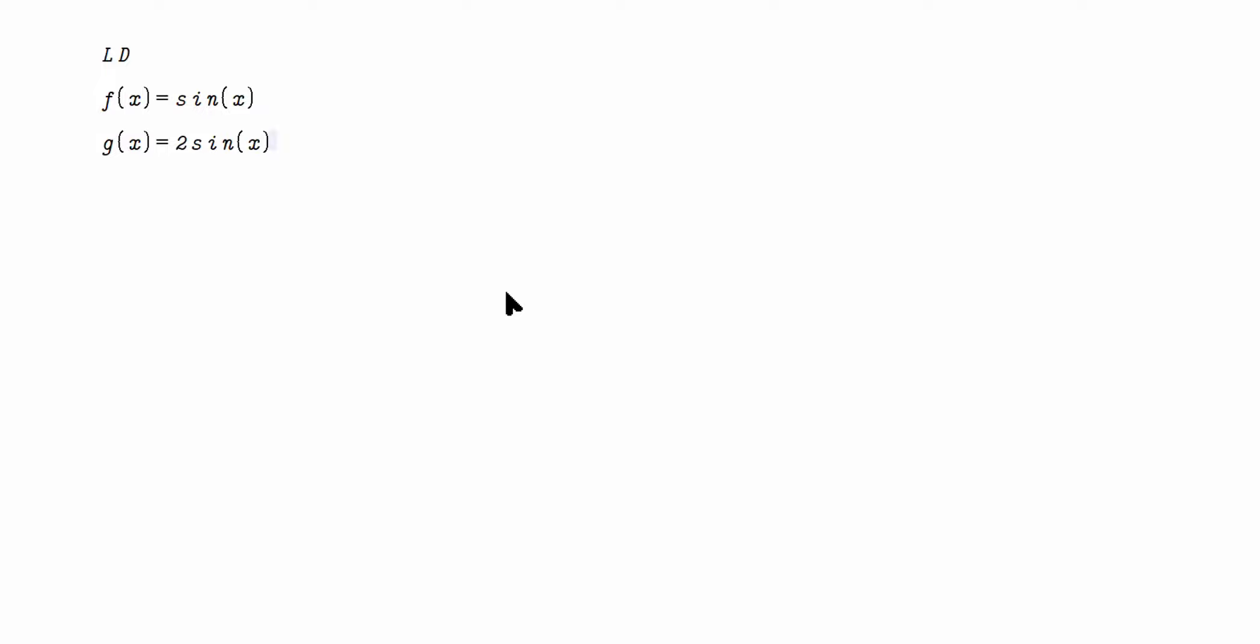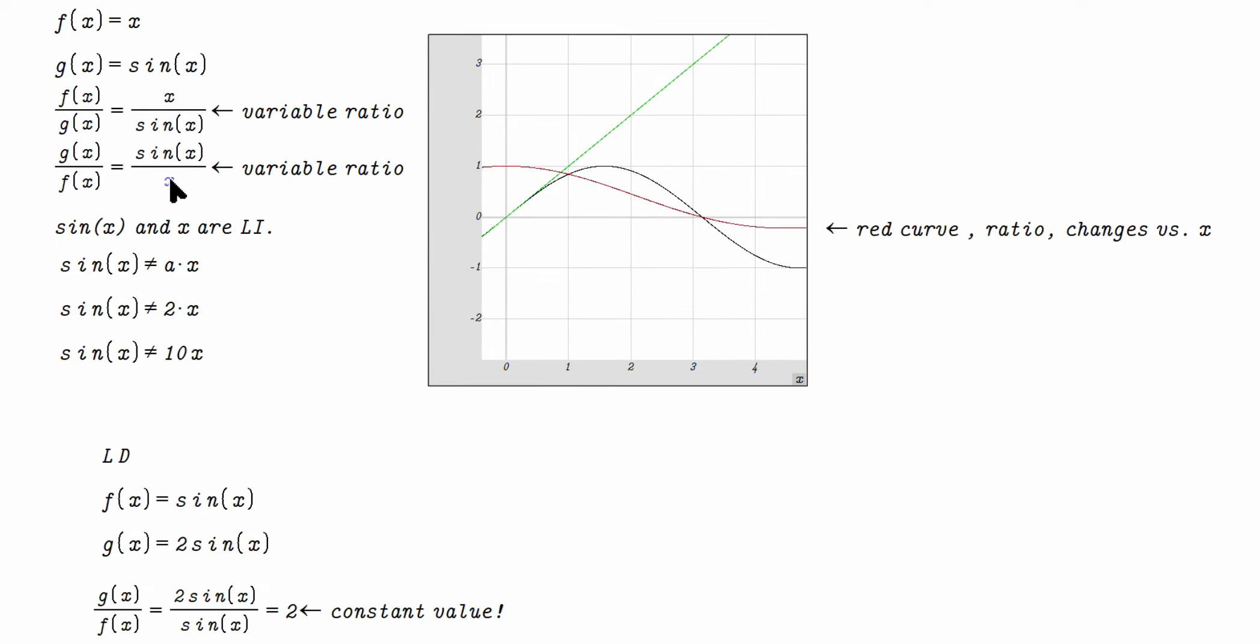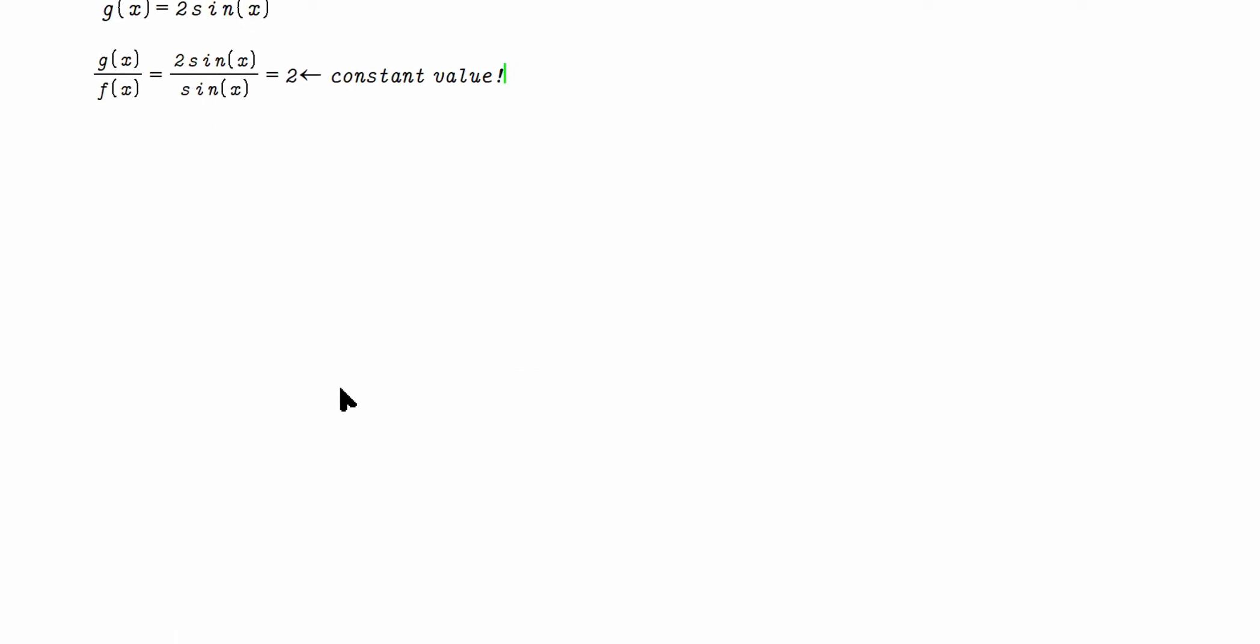If you take g of x over f of x, you get 2 sine x over sine x. But the sine x functions cancel, and you have a 2. This is a constant value. So it's different this time. Here, sine x over x, this is a variable ratio. This is a constant value. It's a constant ratio between them that doesn't change.